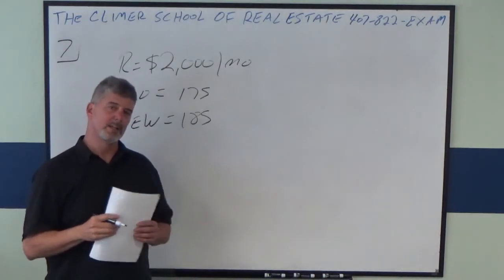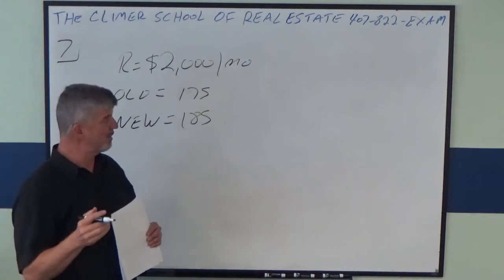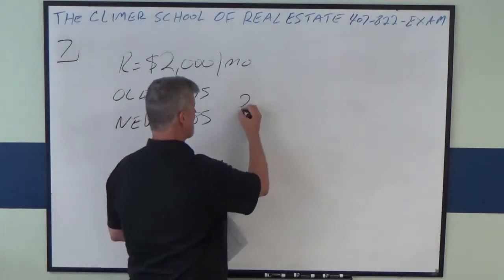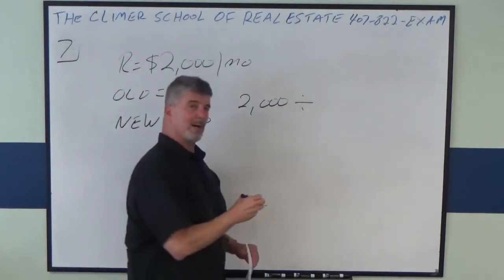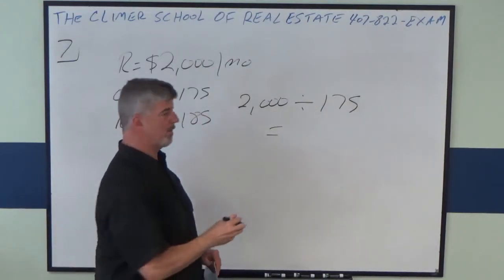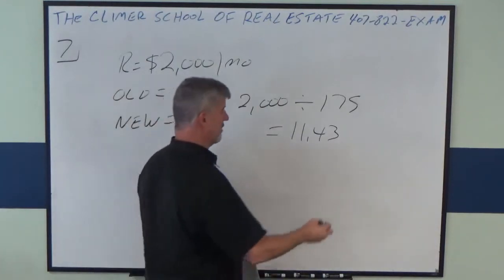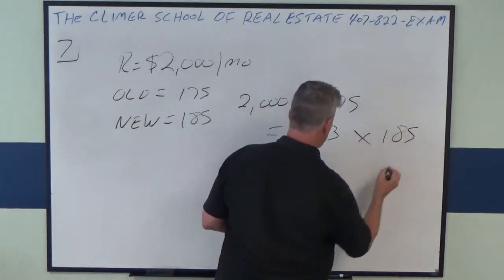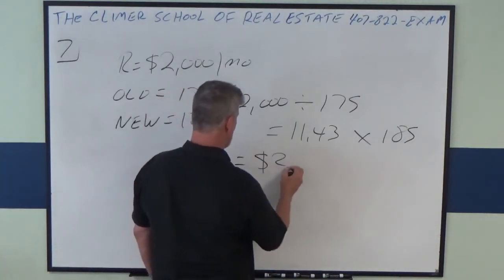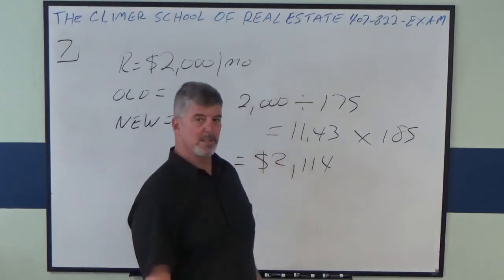I'm going to show you a little trick to help with this. You take the rent — which they're going to give you on the state exam — divide by the old index, $175. That equals $11.43. Then you multiply by the new index, which they will give you on the state exam. And that gives you $2,114. That is the answer. That's all you have to do for a variable lease index problem.